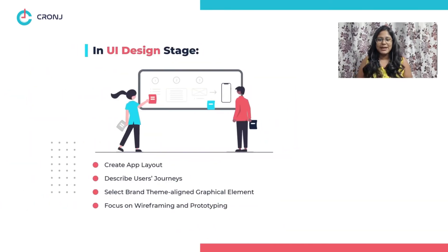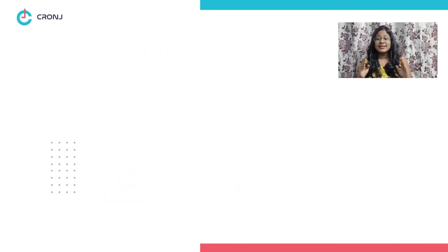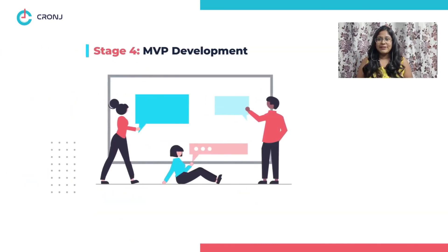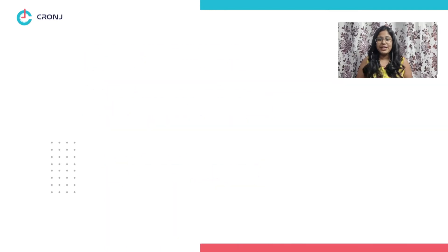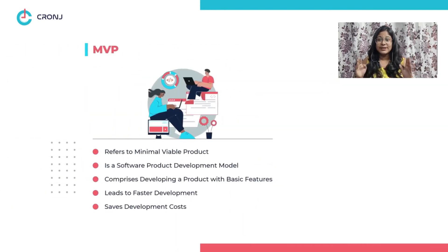Stage three: UI designing. In this stage, you must design the app layout and describe the user's journey. For that, you need to pick brand theme-aligned graphical elements, as well as focus on wireframing and prototyping. Stage four: MVP development. MVP, or minimal viable product, refers to a development model which comprises basic necessary features for a software product.